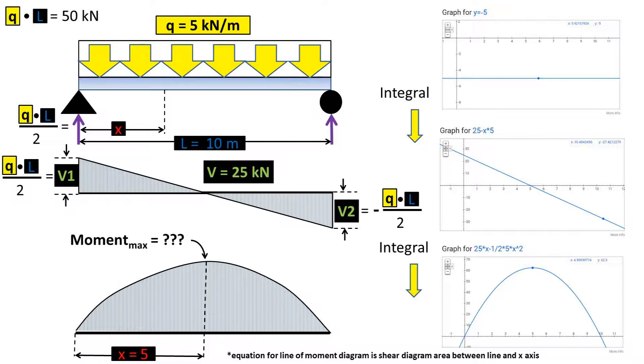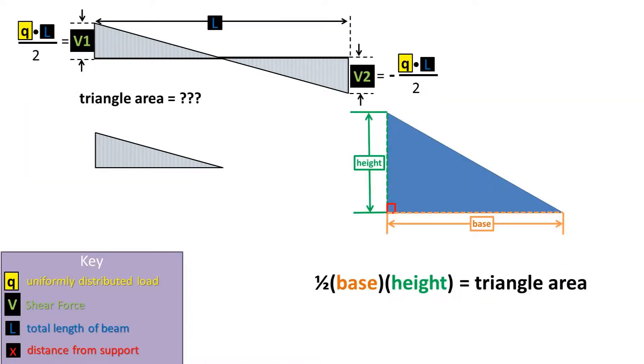We use the power rule to do the integration. The formula is 25 times x minus 1 half times 5 times x squared. We could plug our position of 5 meters at the max point into this equation to find the max moment. However, let's take a step back and prove geometrically what the equation is for the moment max.